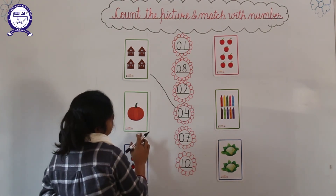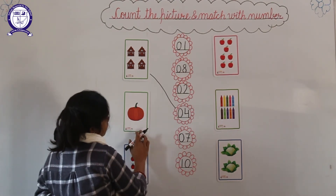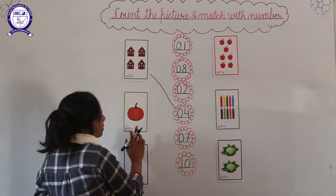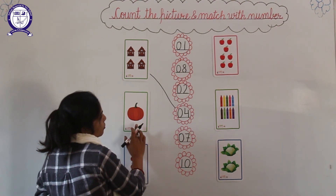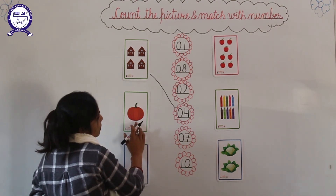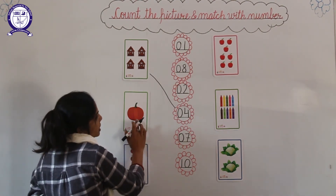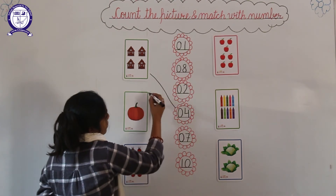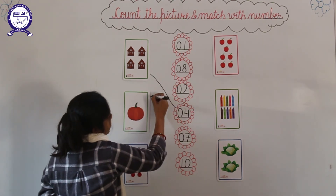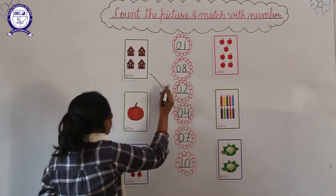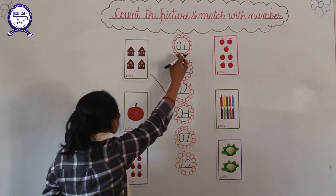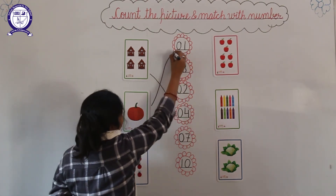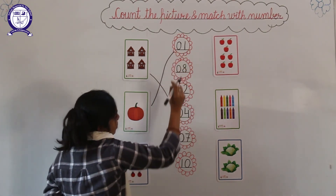And next one — how many pictures are there? 1. There is 1 pumpkin. And where is 1? Here. And match with 1.